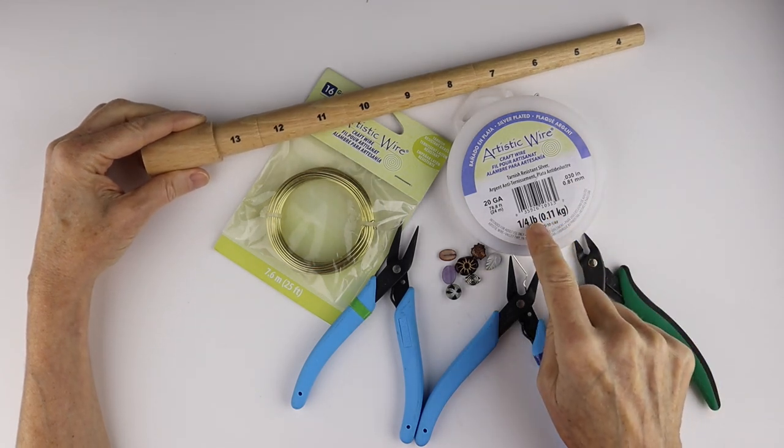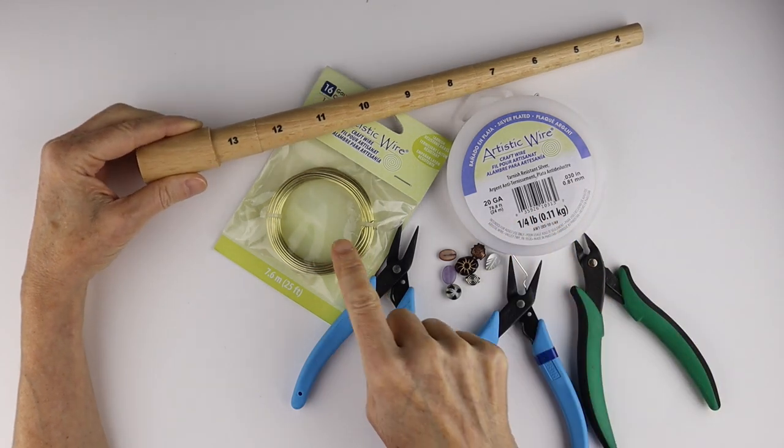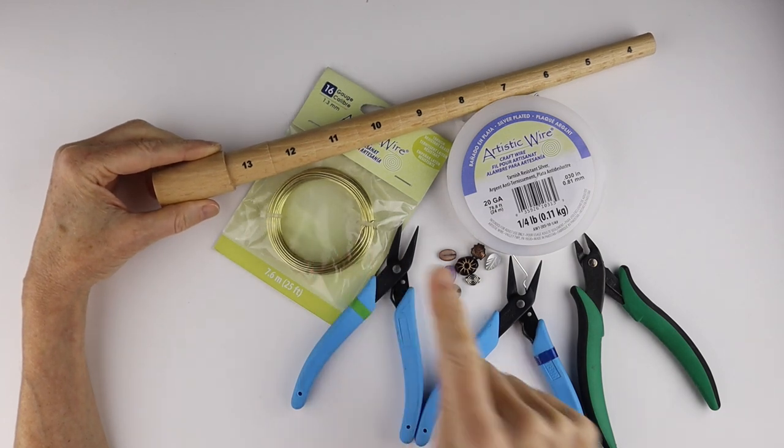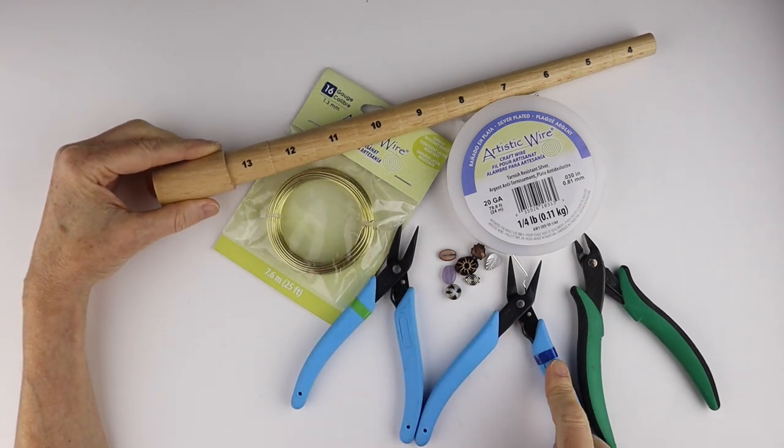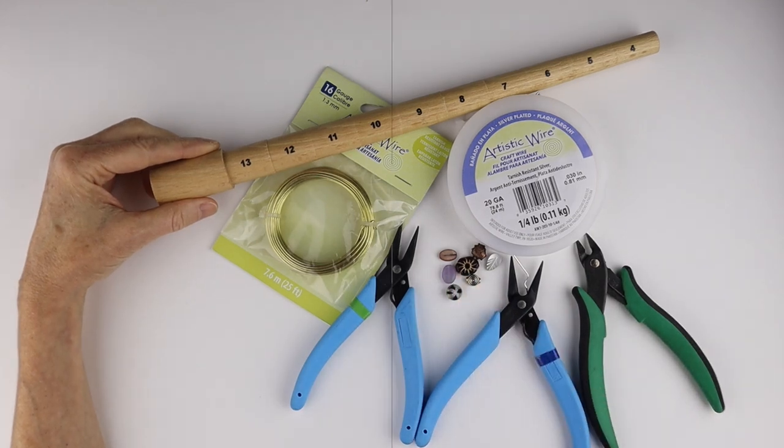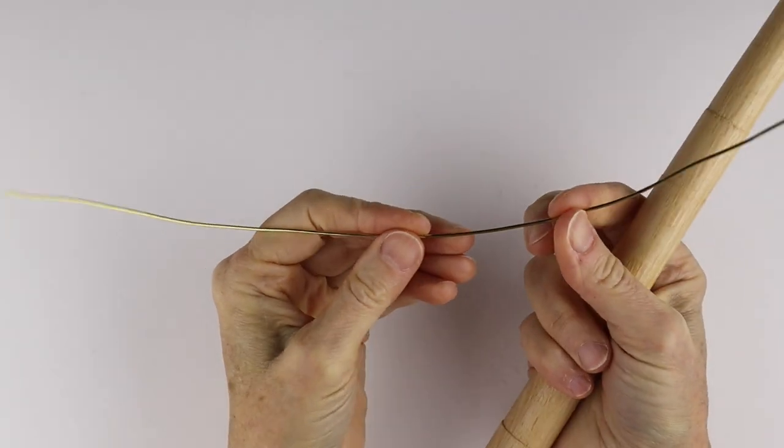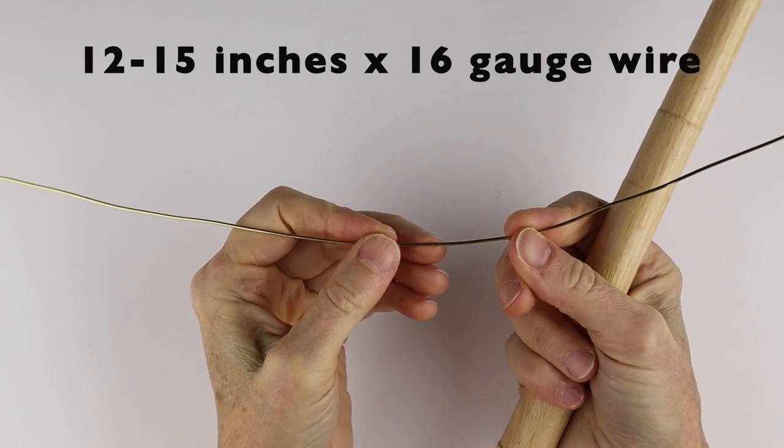You're going to need 20 gauge wire. I have the artistic wire from Beadalon. I also have 16 gauge wire, my round pliers, flat pliers, cutters, and you can also add beads.